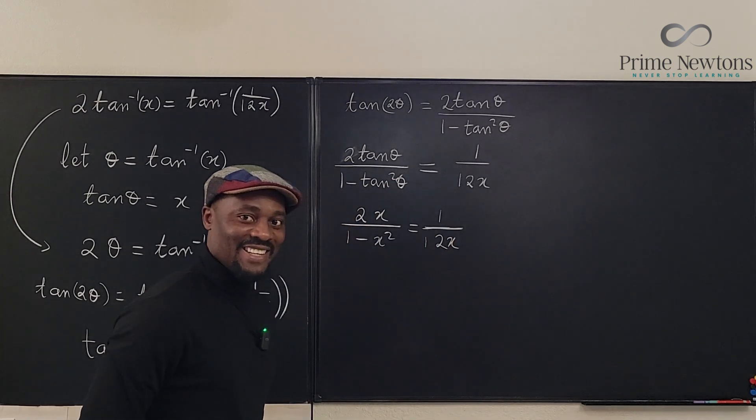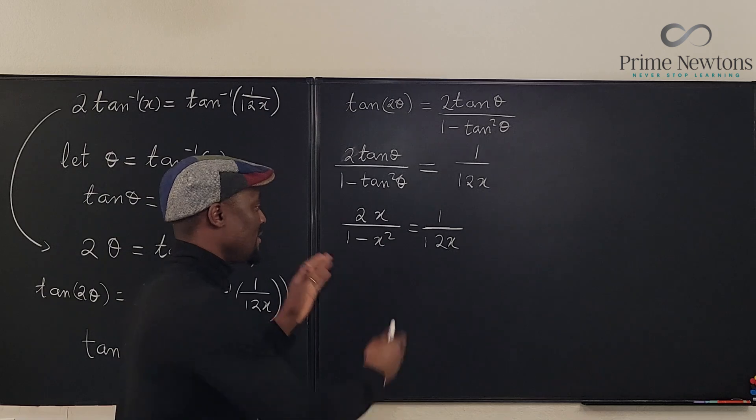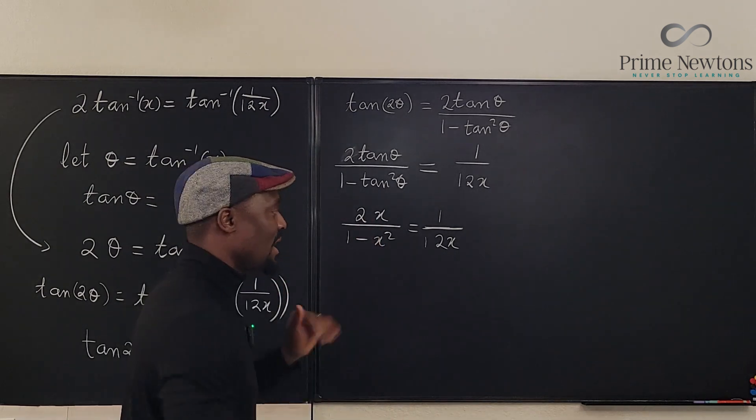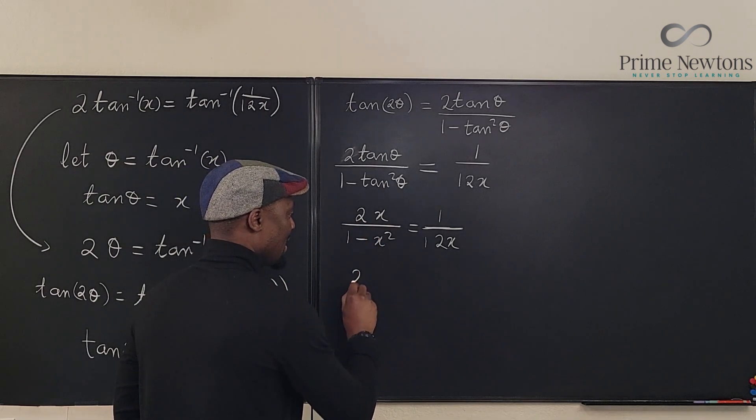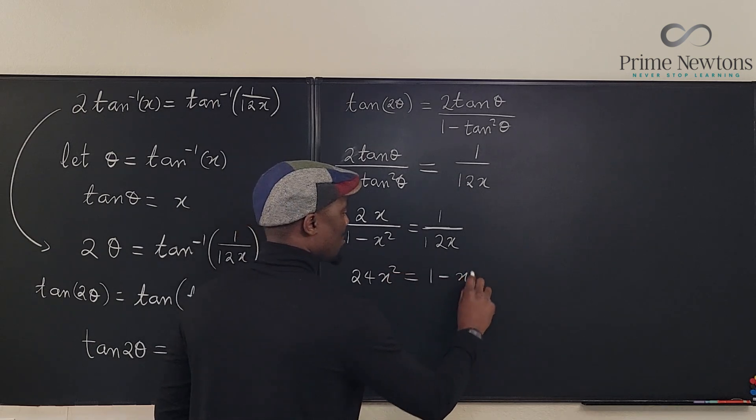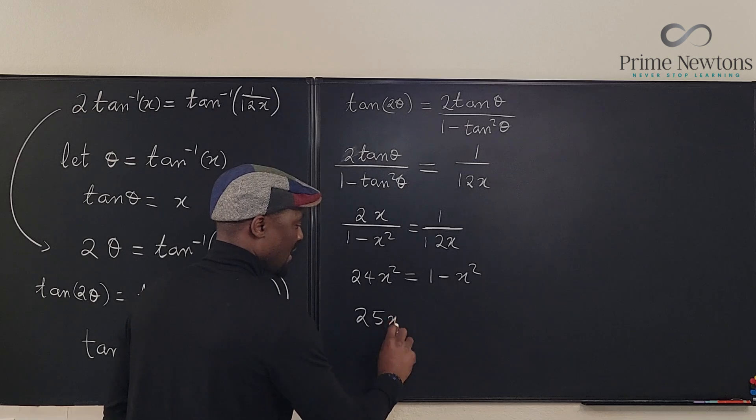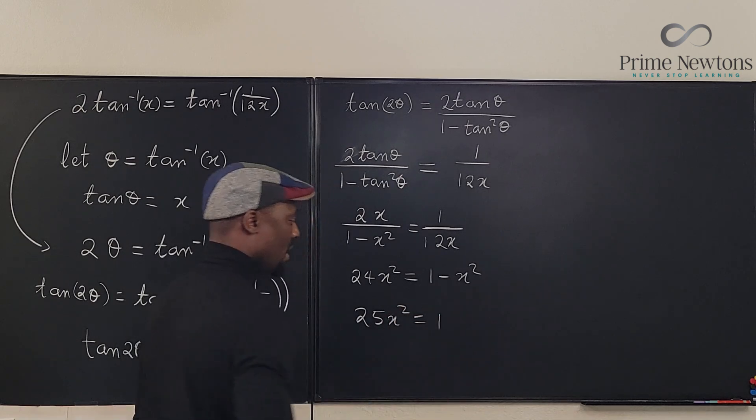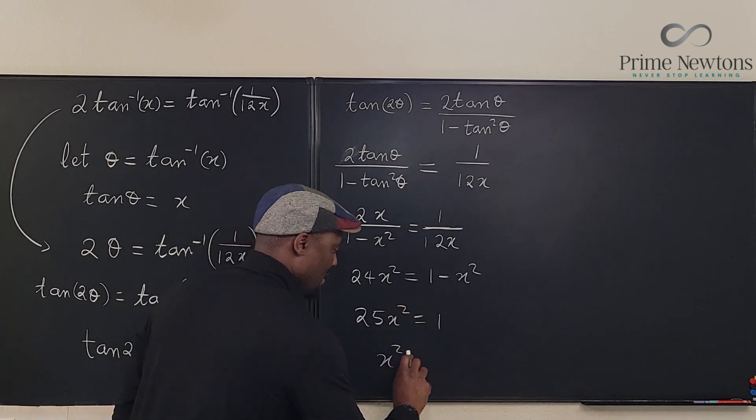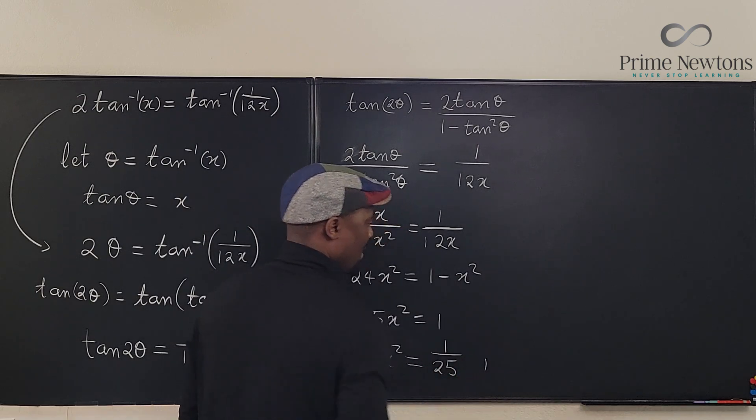12x. Come on, don't get too excited. If we cross multiply or we multiply both sides by 1 minus x squared times 12x, what do we get here? We're going to get 24x squared is equal to 1 minus x squared. Move the x squared over. You have 25x squared is equal to 1. So that x squared is equal to 1 over 25. Huh? What does it mean?